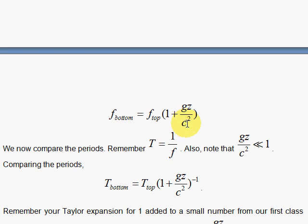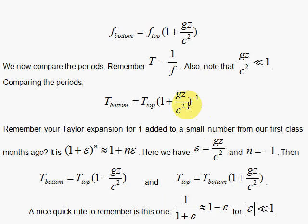And since gz over c squared is very, very small—c is a big number, squared is a super big number, and g is your 9.8 meters per second squared, and z is of the order of meters—we have this nice relationship. We flip them: T_bottom equals T_top. We flip this, and because this is small, we're going to use our Taylor series expansion. A Taylor series expansion is for 1 plus a small number, that quantity to the nth power is 1 plus n epsilon. So here the n is minus 1, and the epsilon is all this stuff in here. So you have all that stuff in there with the minus sign. That's a neat little formula here to remember. Whenever you have 1 over 1 plus a small thing, it's equal to 1 minus that small thing.